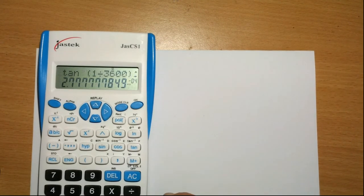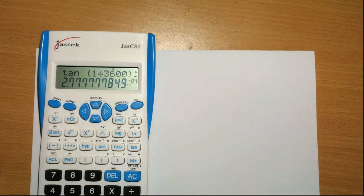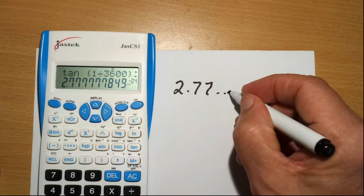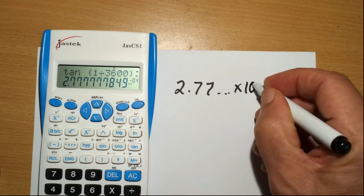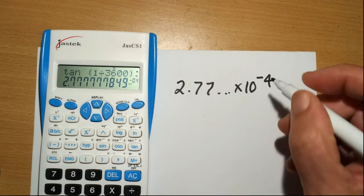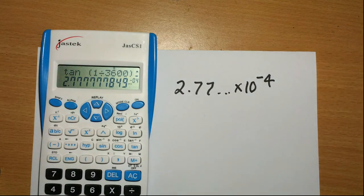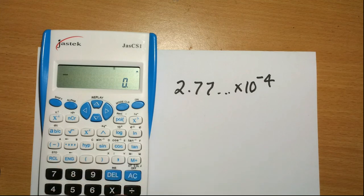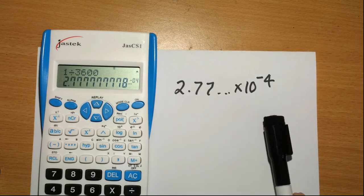Press equals and we get a figure of the tan of 2.77 etc. times 10^-4. Now clear that and we get 1 divided by 3600. We get the same number.